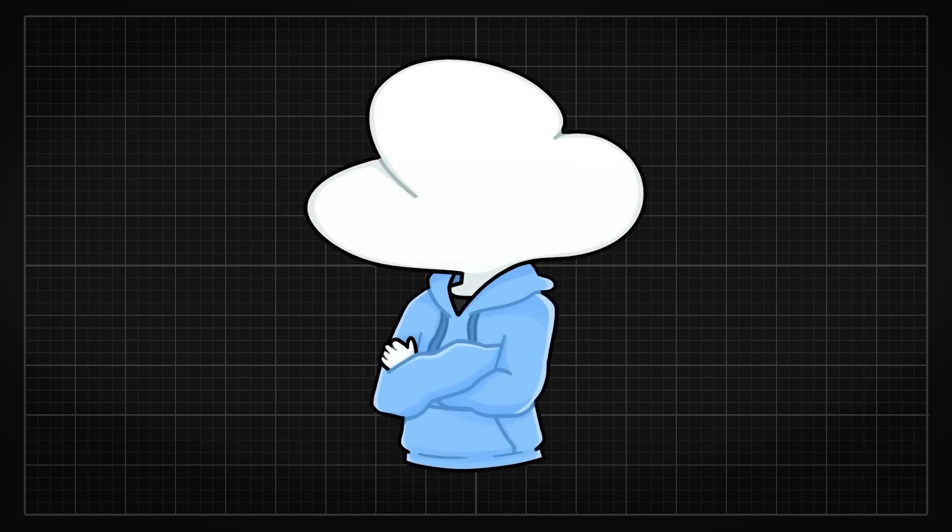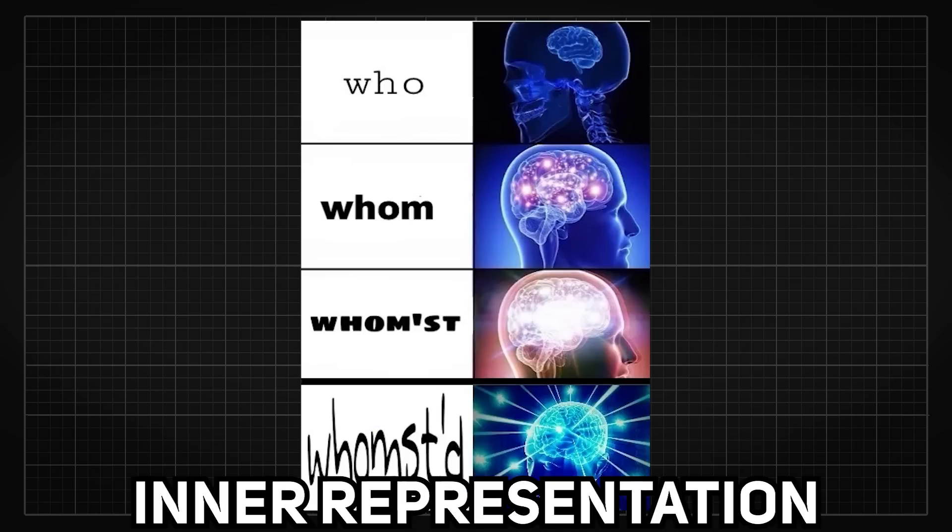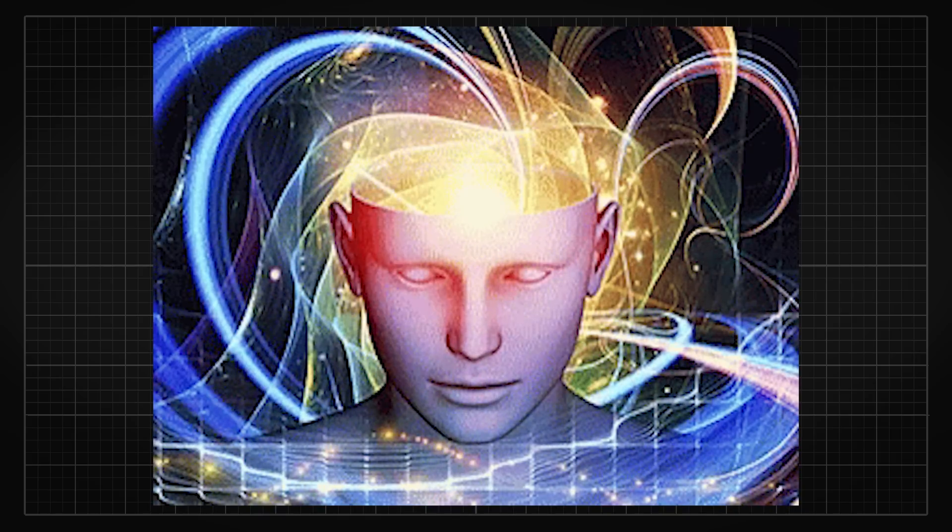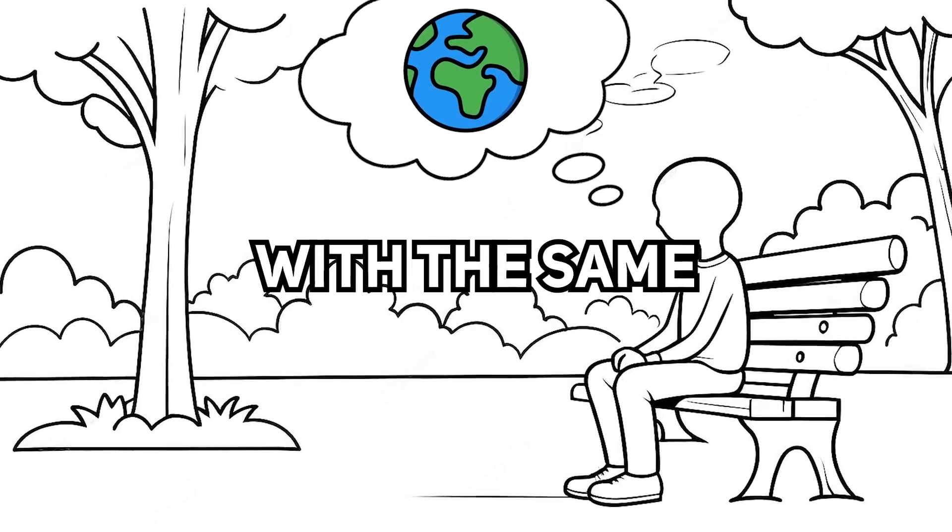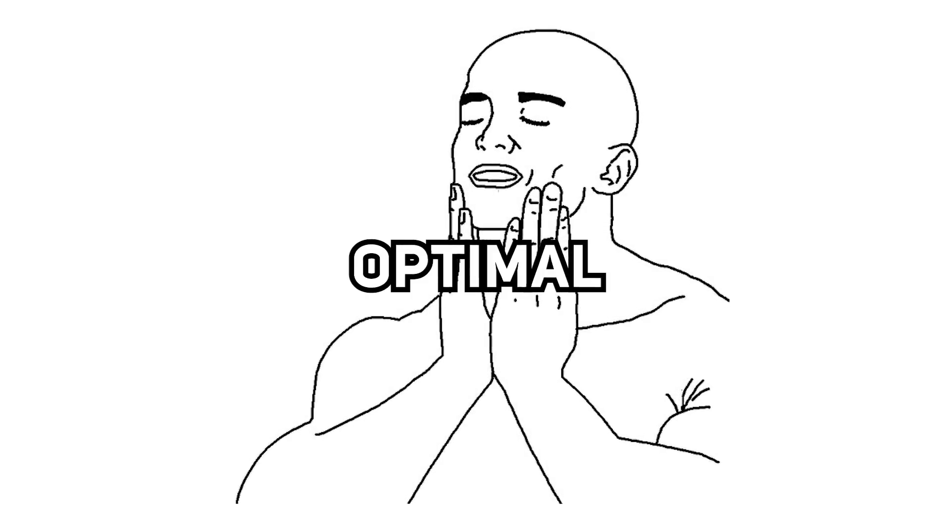So here comes the grand question. Since intelligence is mostly about building an inner representation of our reality, then as its capability increases, would all intellectual beings end up with the same inner representation, which should also be optimal at the same time?